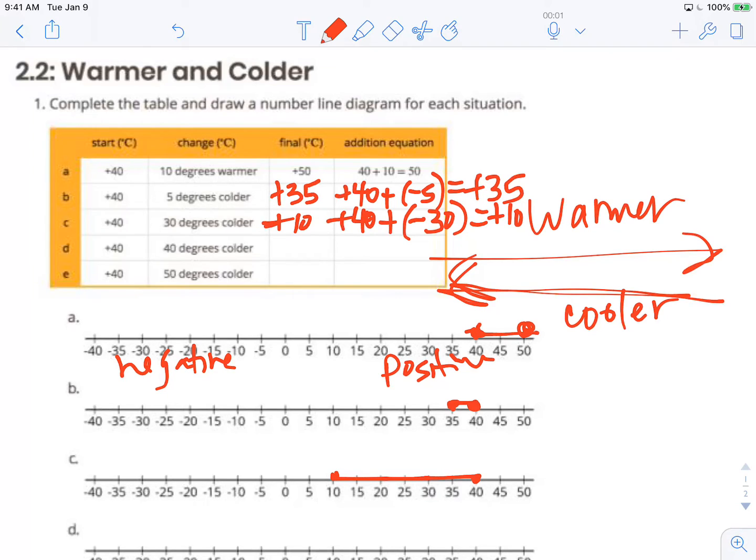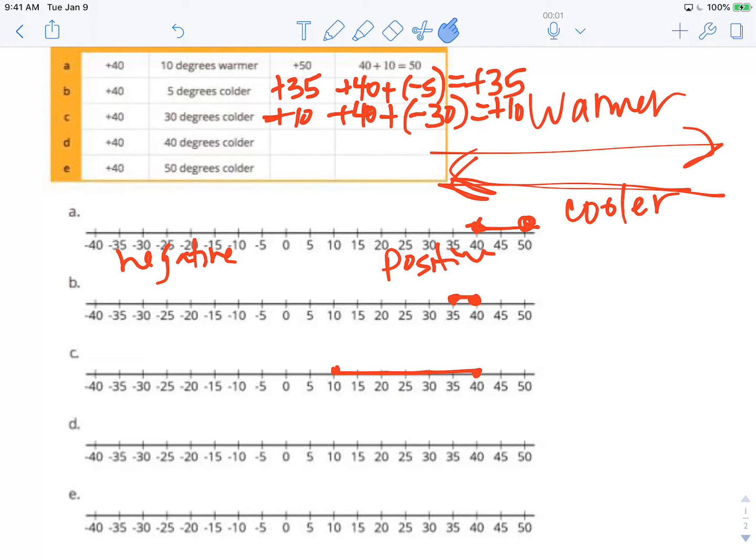For D we're going to start at positive 40 but this time we're going to drop 40 degrees. So if we're starting at positive 40 we drop 40 degrees we're going to end at 0. And 0 is neither positive nor negative.